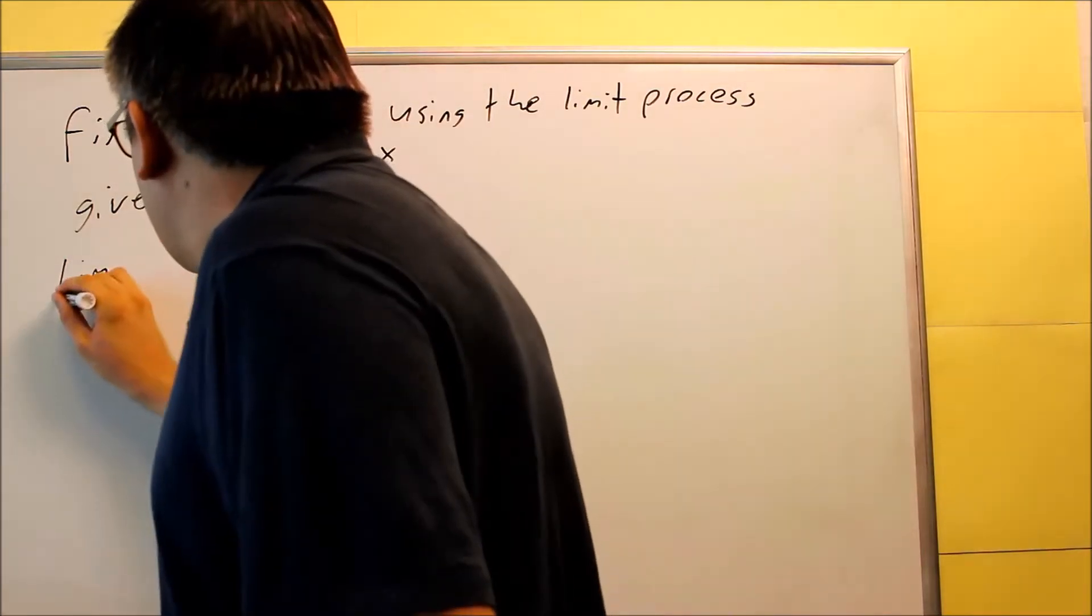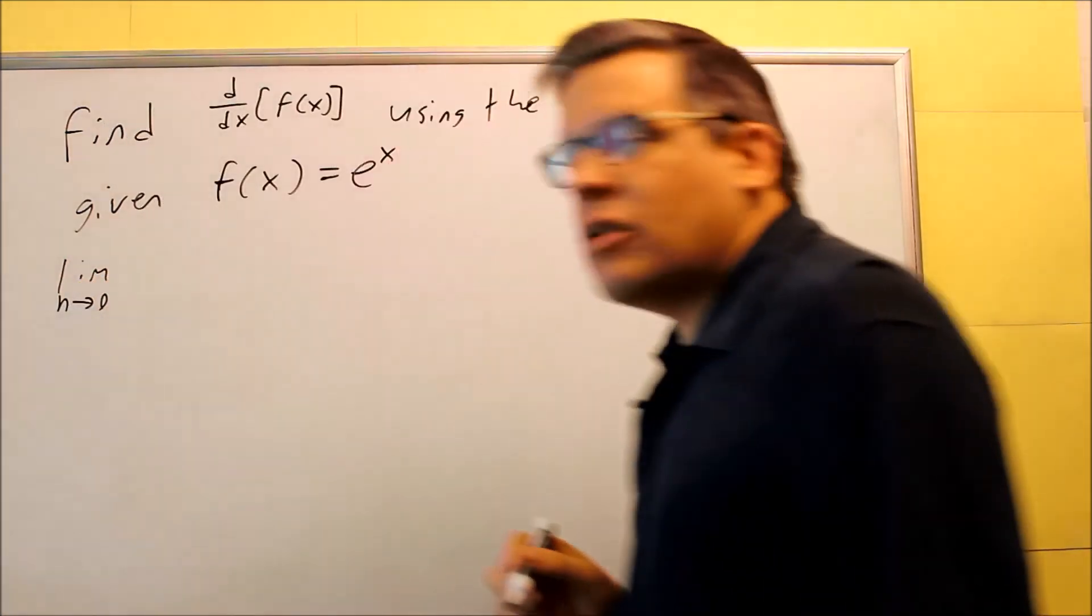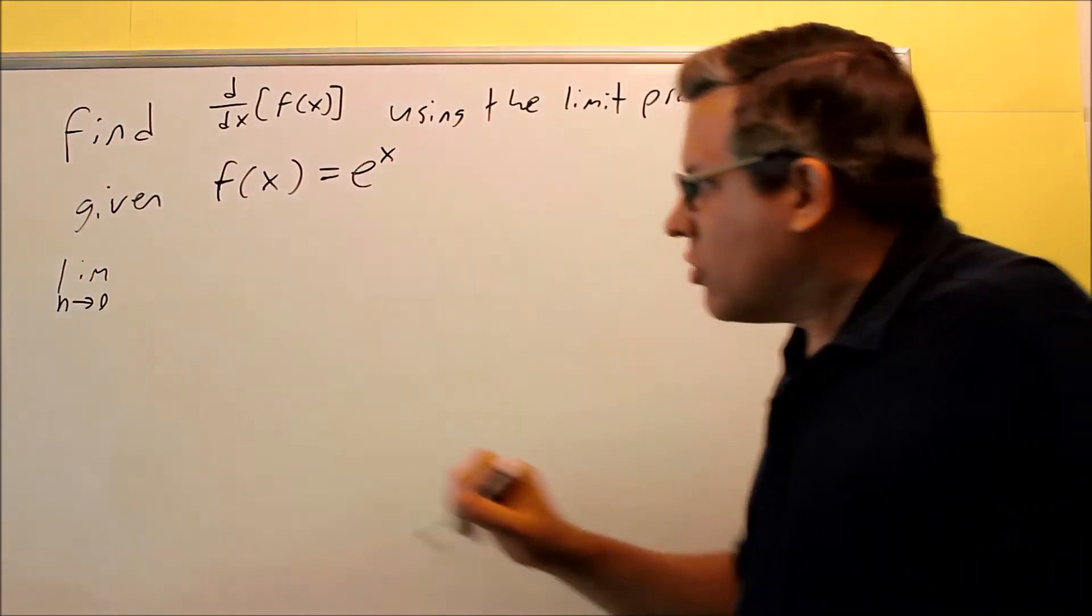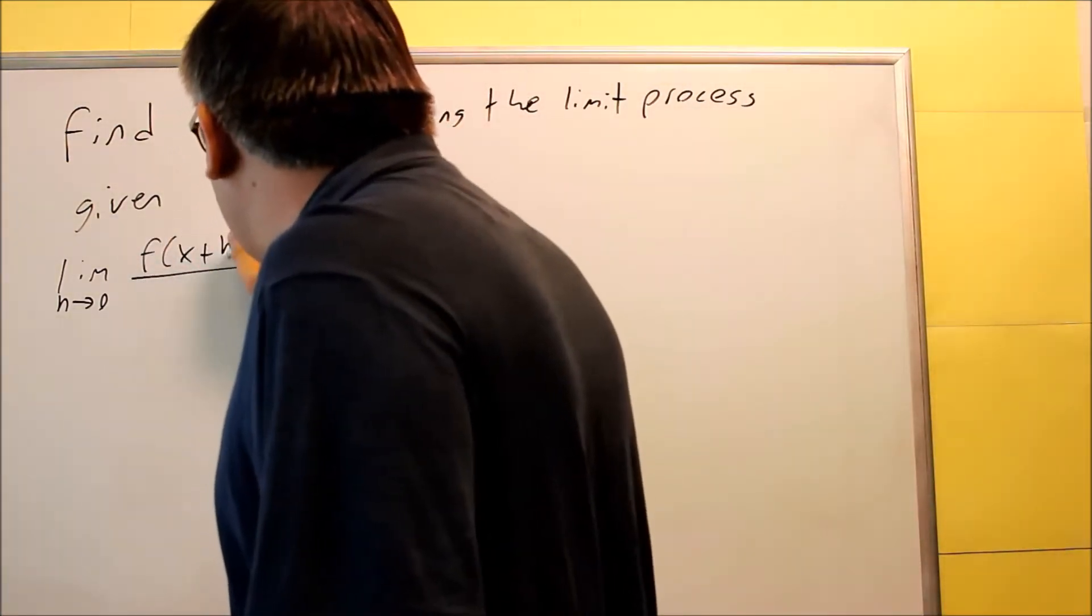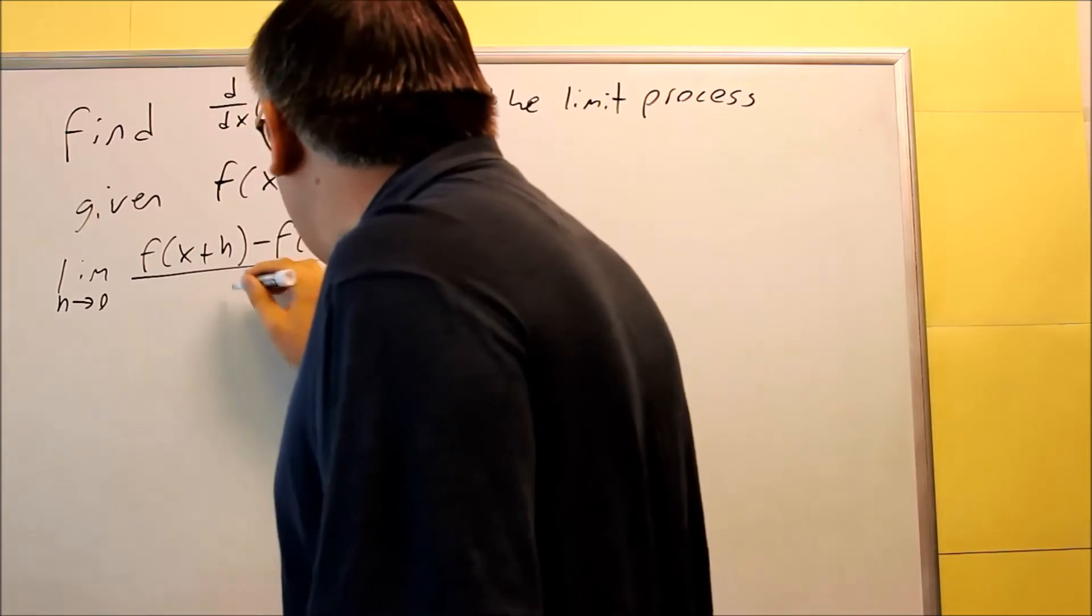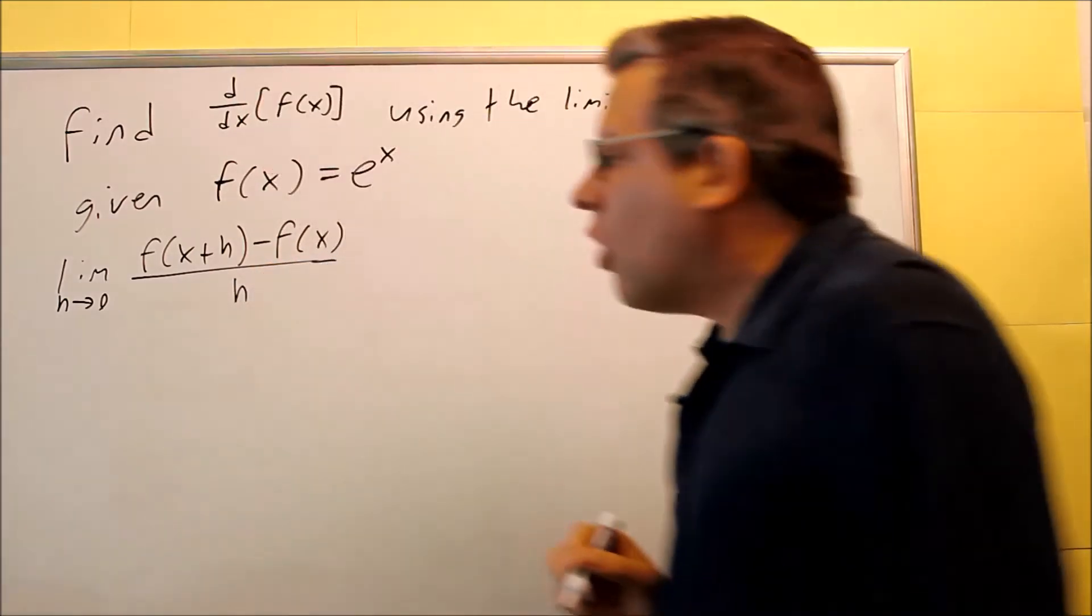Recall that the limit process is the one that involves h, and we're using our difference quotient. So h goes to 0, f of x plus h minus f of x, all that's going to be over h.